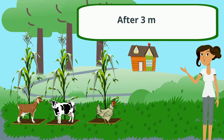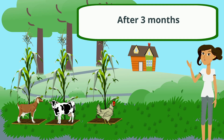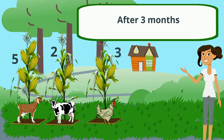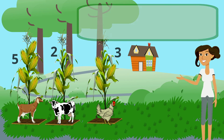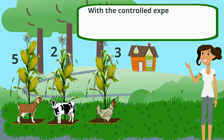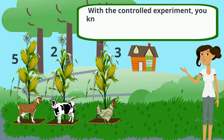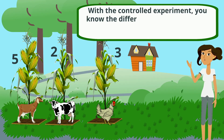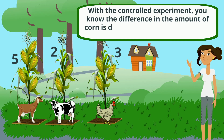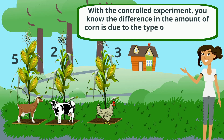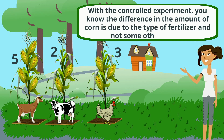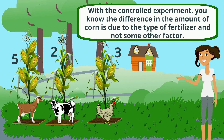Here are the results after 3 months. With the controlled experiment, you know the difference in the amount of corn is due to the type of fertilizer, and not some other factor.